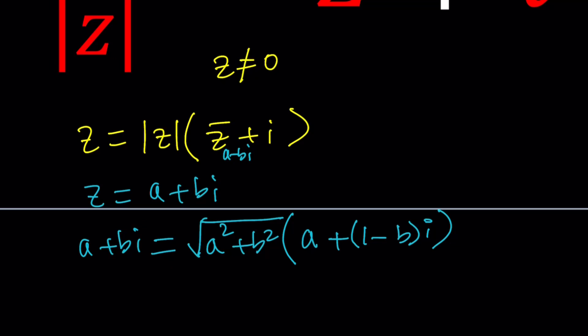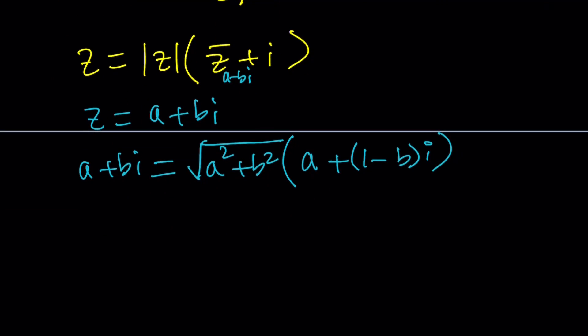From here we have a single equation and two variables. It kind of looks unsolvable, but these are complex numbers, so it's solvable. We can actually come up with a system of equations from a single equation. That's the power of complex numbers — they have two components. So let's go ahead and compare the real parts and the imaginary parts separately.